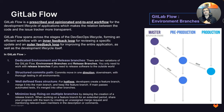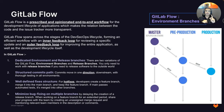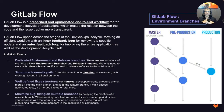Another key feature of GitLab Flow is dedicated environment and release branches. We complained about their structure in Git Flow and missed them in GitHub Flow—in GitLab Flow we bring them back. There are two variations: environment branches for different environments, and release branches. When ready for a release, you create a release branch and tag it for deployment.